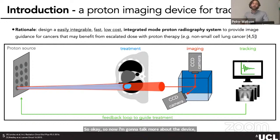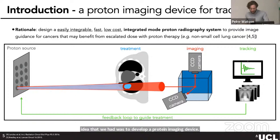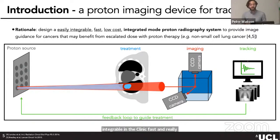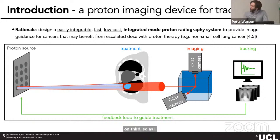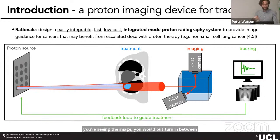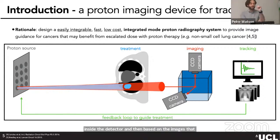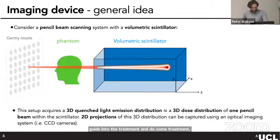The idea of our project was to develop a proton imaging device specifically for tracking for lung cancer — an easily integrable, fast, and low-cost proton radiography system to provide image guidance for cancers that might benefit from escalated dose in proton therapy, such as non-small cell lung cancer. The system alternates between treatment and imaging mode by changing the energy of the source, then uses feedback to guide treatment adaptation through gating or other techniques.